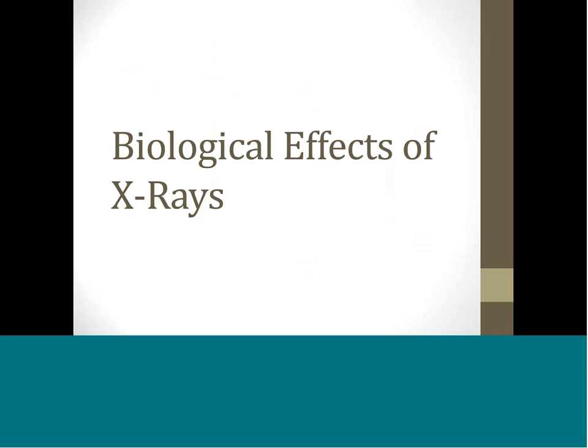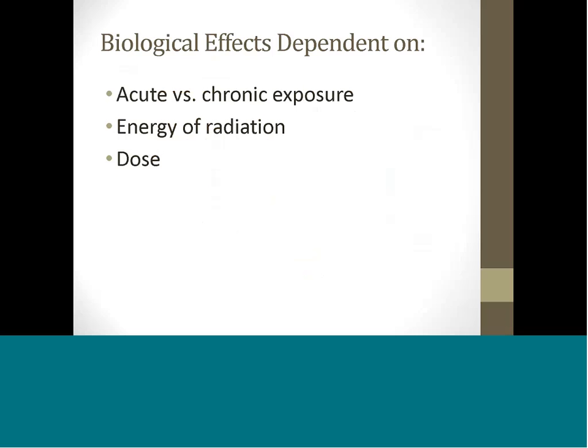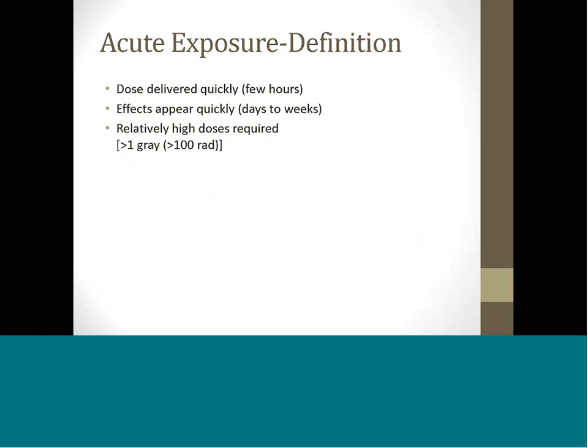Biological effects of X-rays. The biological damage produced by radiation depends on whether a given dose is delivered in a short time acutely or distributed over a long time chronically, the energy of the radiation, and the magnitude of the dose. An acute dose of radiation is delivered in a relatively short period of time, a few minutes to hours. Most of its effects will appear relatively quickly, within days or weeks, and biological repair mechanisms will have little chance to function before the effects appear. Relatively high doses of greater than one gray are required to produce such a median effect.